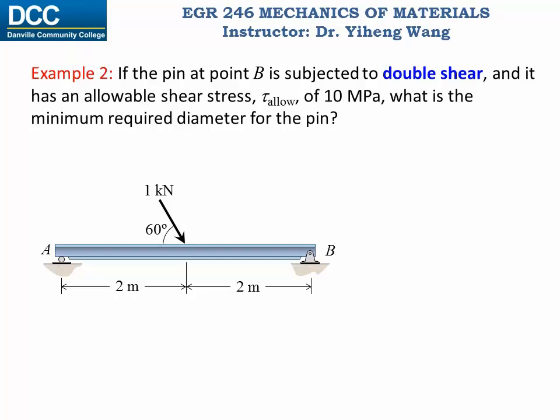Let's look at another example. For this simply supported beam structure, if the pin at point B is subjected to double shear and the allowable shear stress for the pin material is given, we need to determine the minimum required diameter of the pin. Since the allowable shear stress is already given, we don't need to find it through the factor of safety. We just need to ensure that the shear stress at pin B doesn't exceed the allowable value. The strategy is to equate the allowable shear stress tau to the maximum shear force at pin B divided by its cross-sectional area, which equals pi times (D/2) squared, and then solve for the diameter D.